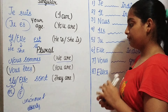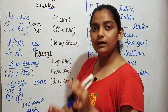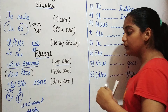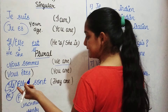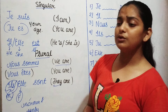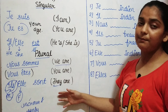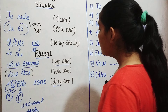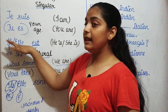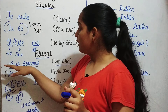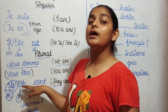Elles sont is used where all are women, or all are feminine. Both ils sont and elles sont mean 'they are.' Now let's revise all forms: je suis, tu es, il est, elle est, nous sommes, vous êtes, ils sont, elles sont.